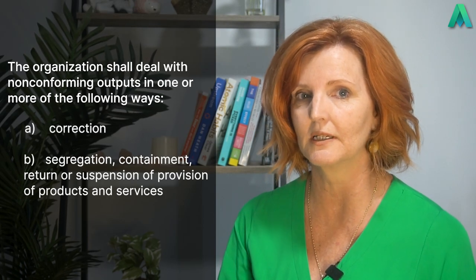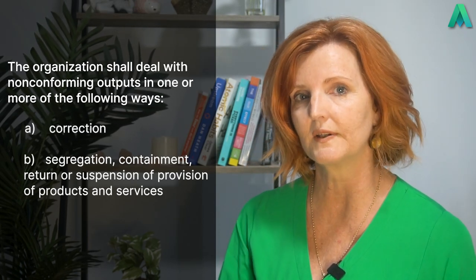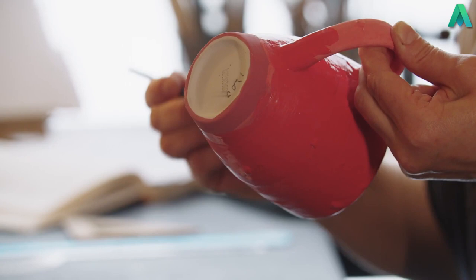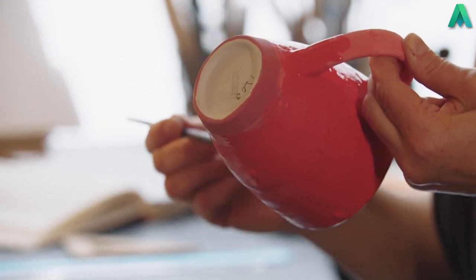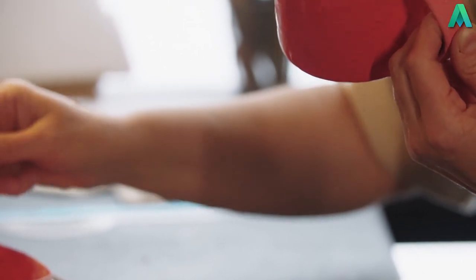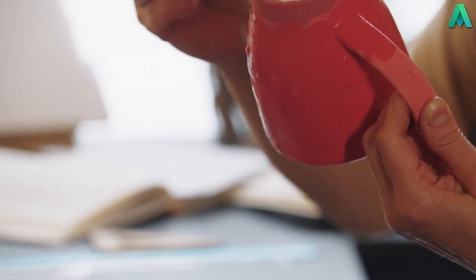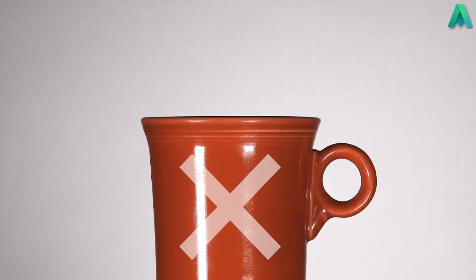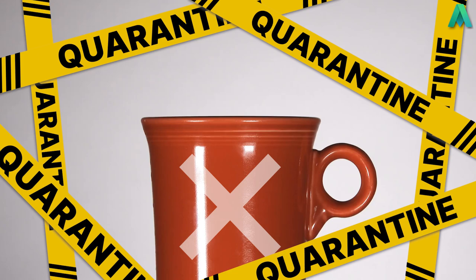Then we move on to the next option, which is B: segregation, containment, return or suspension of provision of products and services. We have this red product that is not conforming because it was meant to be green. We are not able to repaint it because it would impact the functionality of the product. So our option then is to segregate or contain the item — we would quarantine it and even possibly tag it out so it's not used or sent out to a customer.